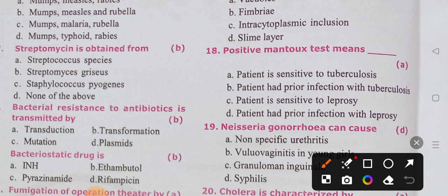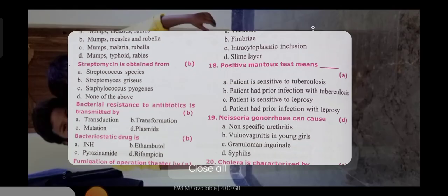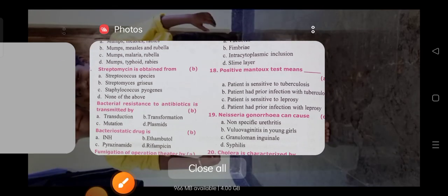A positive Mantoux test means the patient is very sensitive to tuberculosis. If the diameter is 10 mm or more, it is strongly positive, meaning the patient is highly sensitive to tuberculosis.